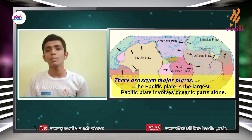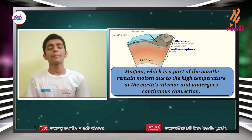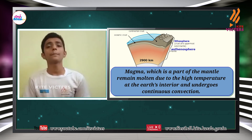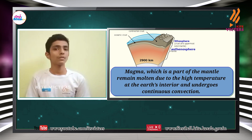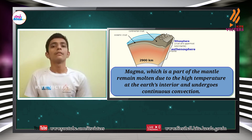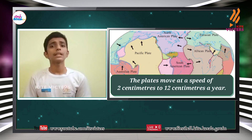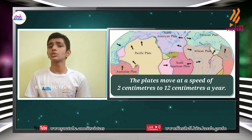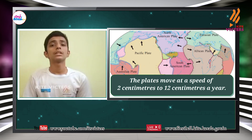After that, we discussed about the movement of the plates. Magma, a part of the mantle, remains molten due to high temperature in the earth's interior. As a result, continuous convection occurs, which leads to the movement of the lithospheric plates. We also discussed about the speed of the movement of plates. The lithospheric plates move around 2 cm to 12 cm a year, which is not always uniform.